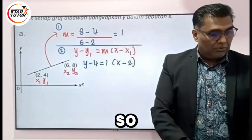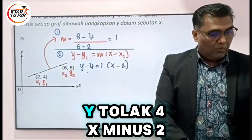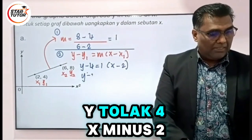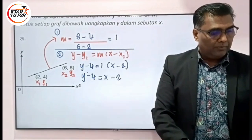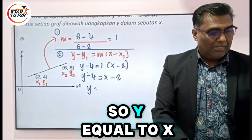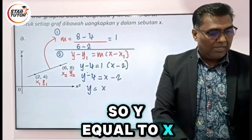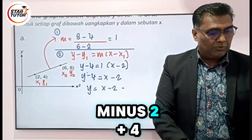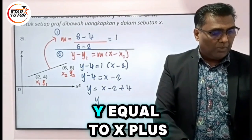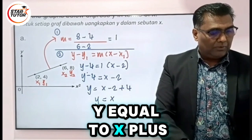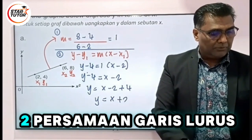y = 4x - 2, so y = x - 2 + 4, y = x + 2.